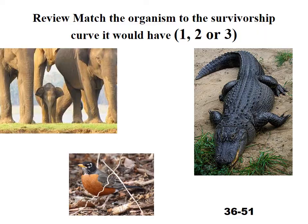Let's match organisms to survivorship curves, assuming no poaching or hunting. The elephant would have a type one curve — they take good care of their young and protect them, growing to old age. A Robin has a rough life — you can die as an egg, a chick, or an adult — so they have a type two curve. A gator has some parental care but lots of baby gators get eaten; once large enough nothing messes with them, so they have a type three survivorship curve.